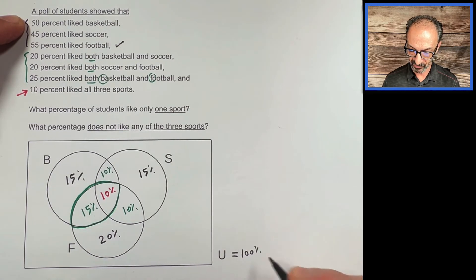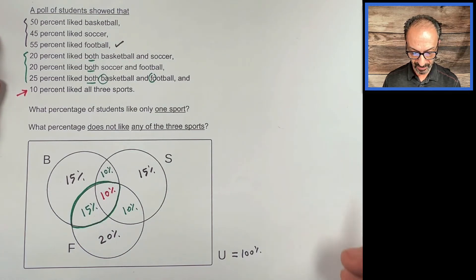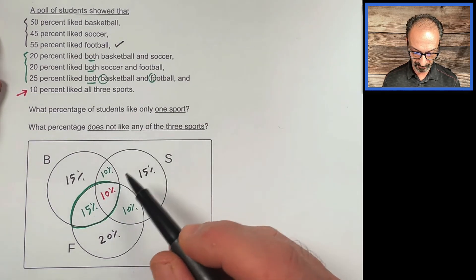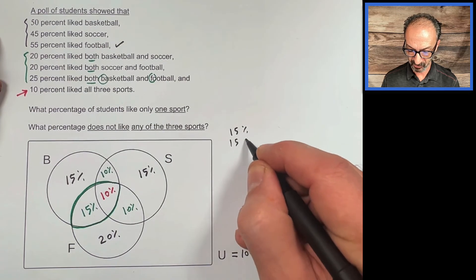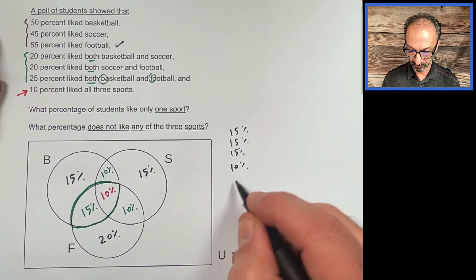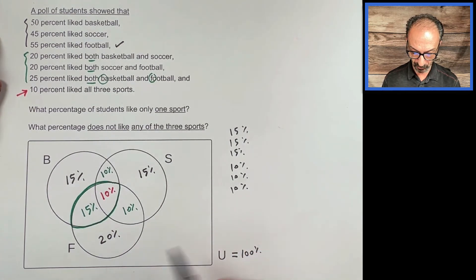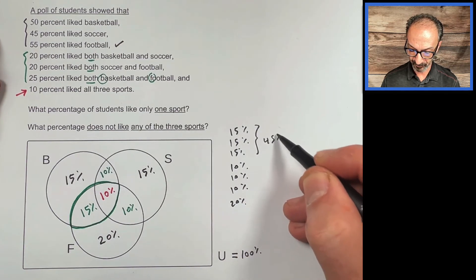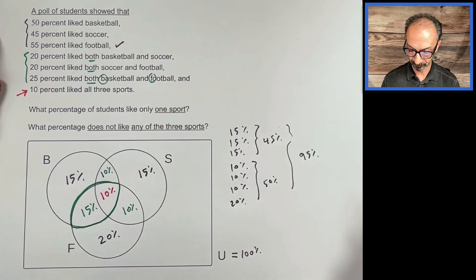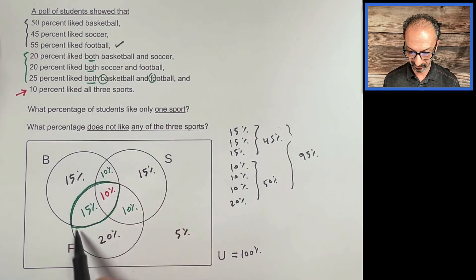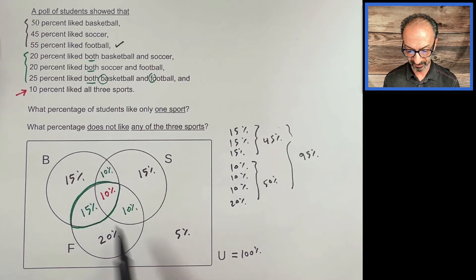This whole diagram should add up to 100% because we're using percents and the universe should be a whole. Adding everything inside those three sports: three 15s and three 10s and 20 — that's 45 plus 50 = 95%. So we have 5% missing to make it 100%, which means 5% goes outside the circles — students not taking any sport.